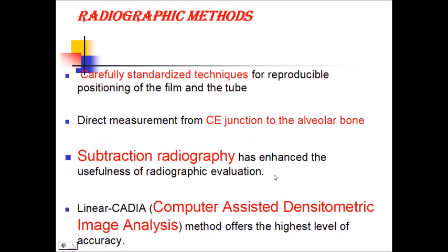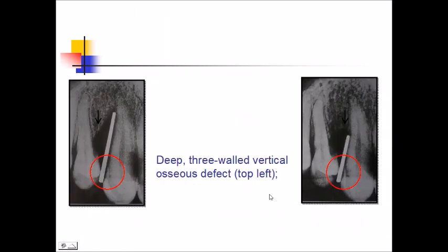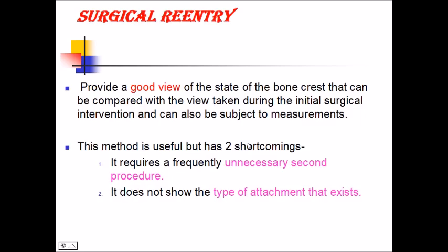In the radiographic method, careful standardization of technique for reproducible positioning of the film and tube is required. The level of bone formed can be found by measuring from the cementoenamel junction to the alveolar bone. Other methods include subtraction radiography and computer-assisted densitometric image analysis. This diagram shows pre- and post-op comparison in a radiograph. Surgical reentry provides a good view.